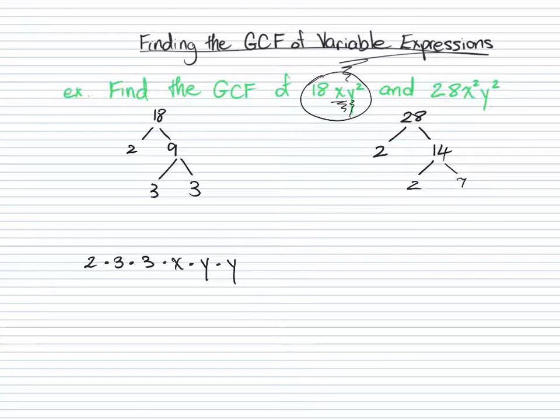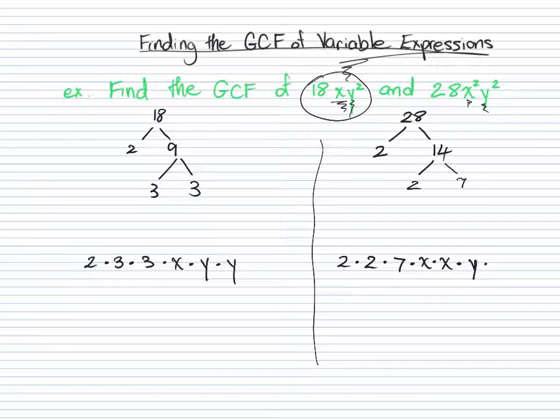The smallest prime factor of 14 is 2, and 2 times 7 gives you 14. So those are the prime factors. So we have broken that 28 up into 2 times 2 times 7, and we can go ahead and do the same thing for the variables. x squared is really x times x, and y squared is really y times y.